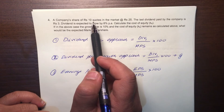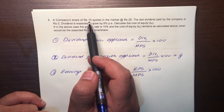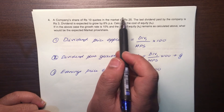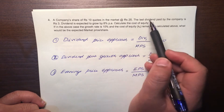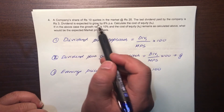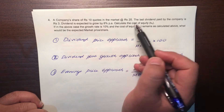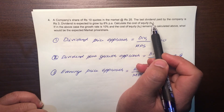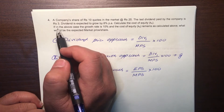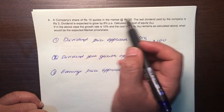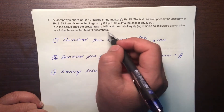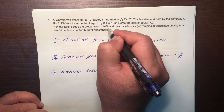Now let's look at this problem. A company's share of rupees 10 quotes in the market at 25, so the market price per share is 25 rupees. The last dividend paid by the company is 3 rupees, and dividend is expected to grow by 8% per annum. Calculate the cost of equity, KE. The second part asks: if the growth rate is 10% and the cost of equity remains as calculated above, what would be the expected market price per share?